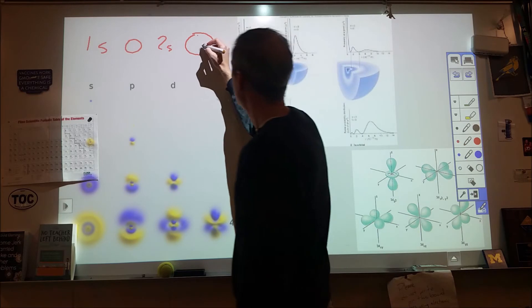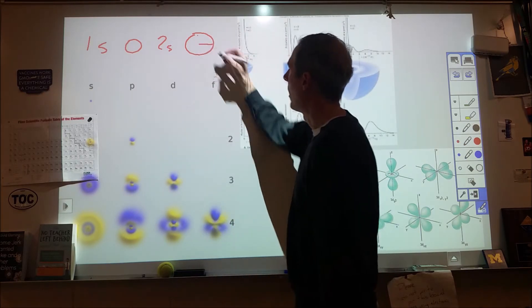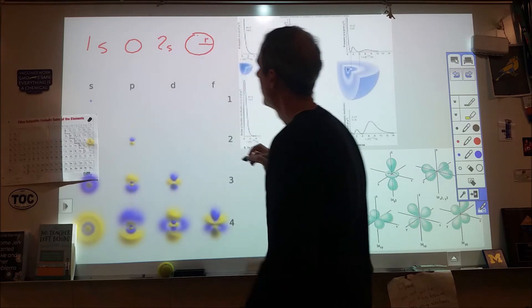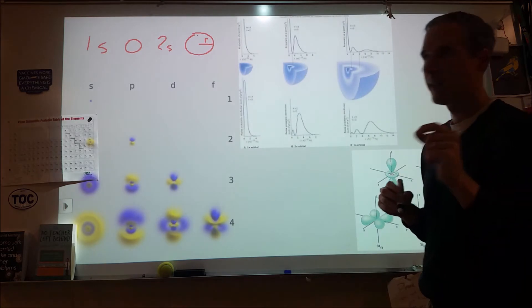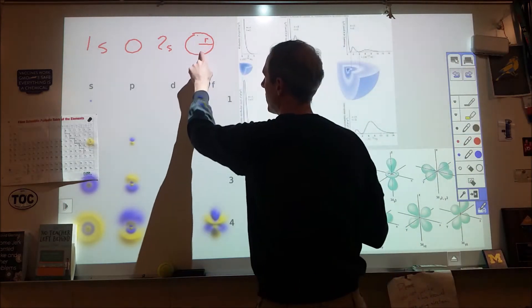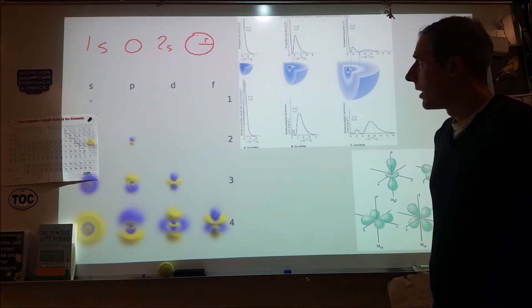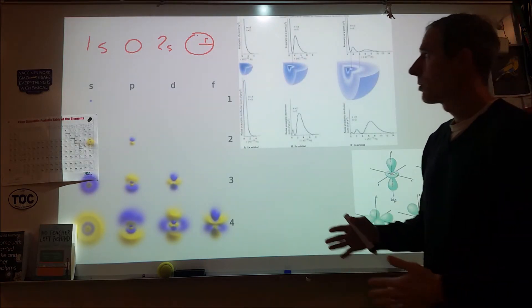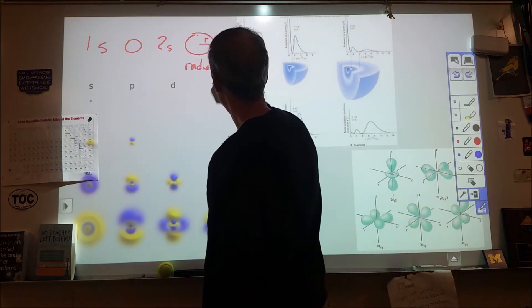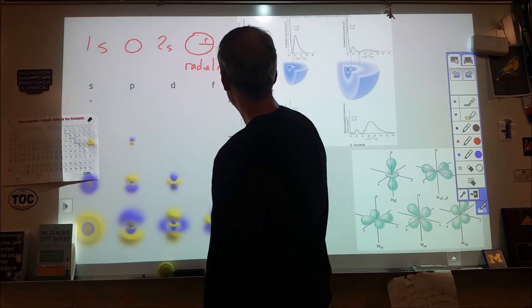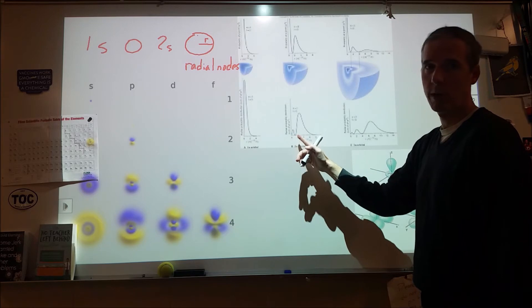In particular, when we go from being a 1s orbital to a 2s orbital, we just kind of draw this as being larger. But what we're not showing you is there's something else going on in that orbital state that you can only really see when you look at the mathematical function, and that is there's a thing called a node. A node is a place where there's no electron density.